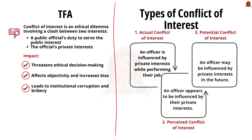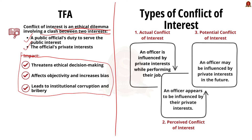Conflict of interest is a kind of ethical dilemma dealing with the conflict between two interests — a public official's duty to serve the public interest and their private interest. It poses a serious threat to ethical decision making, affecting objectivity and increasing biasness. It is also a serious governmental issue as it leads to corruption and bribery. There are three types: an actual conflict of interest, where an officer is influenced by private interest when doing their job; and a potential conflict of interest, where an officer may be influenced in the future by their private interest.